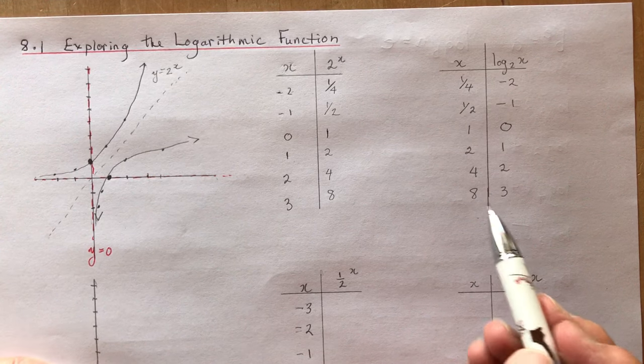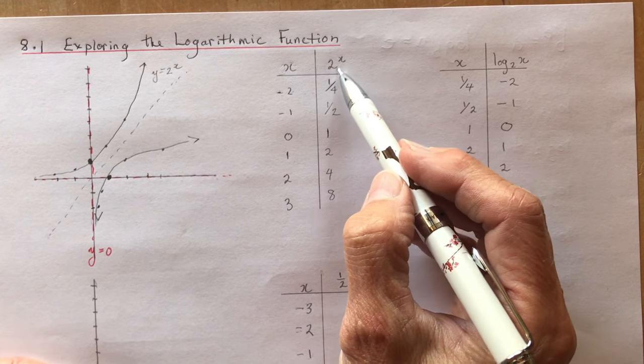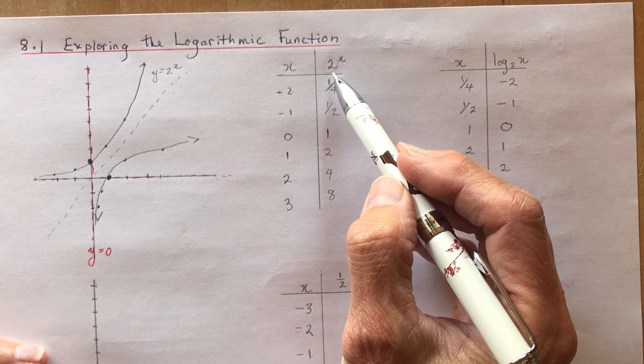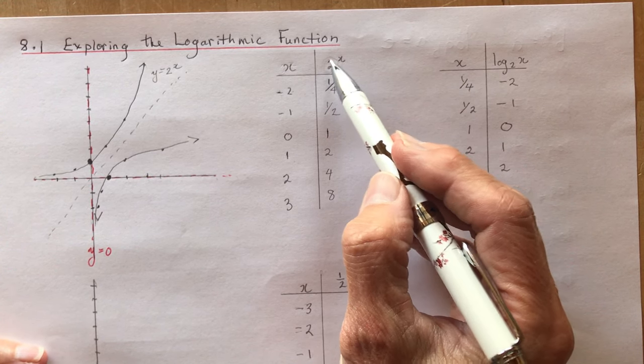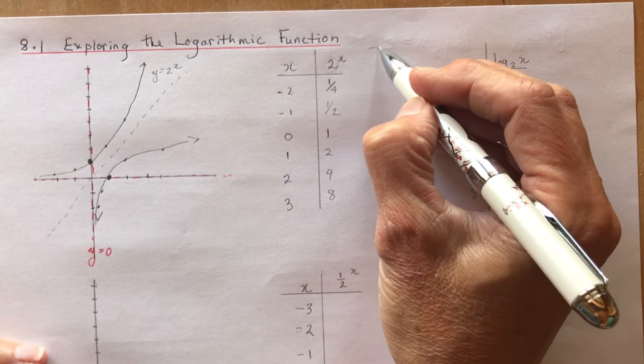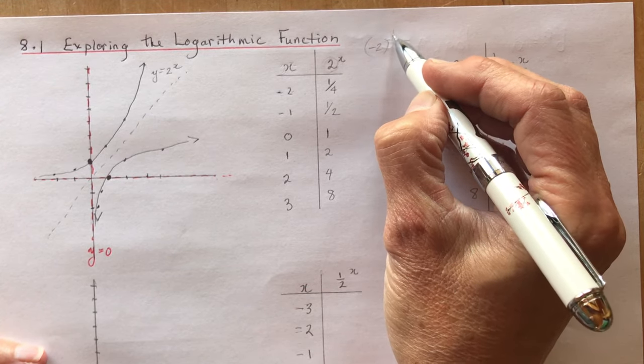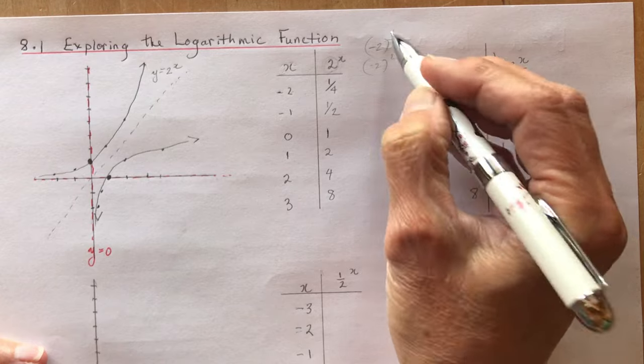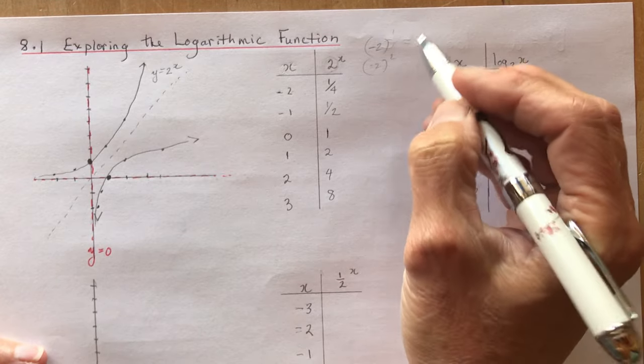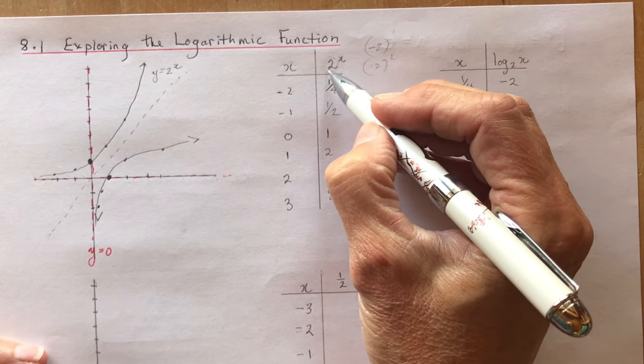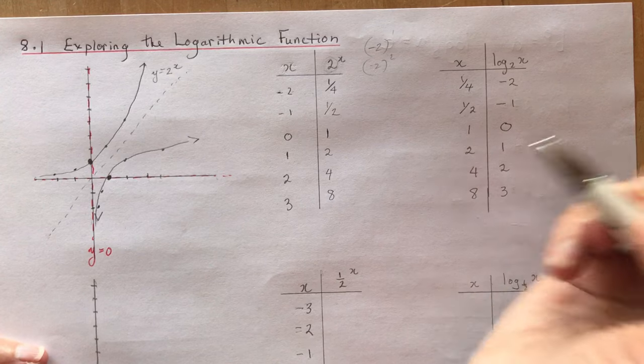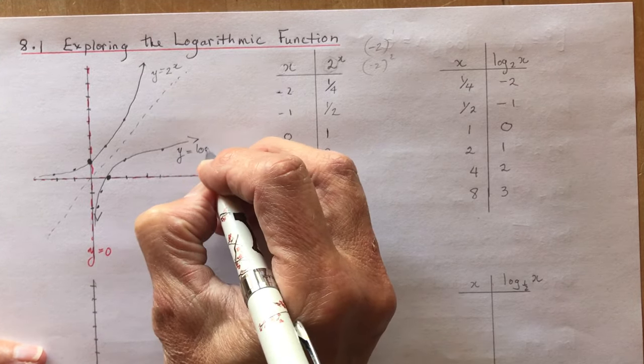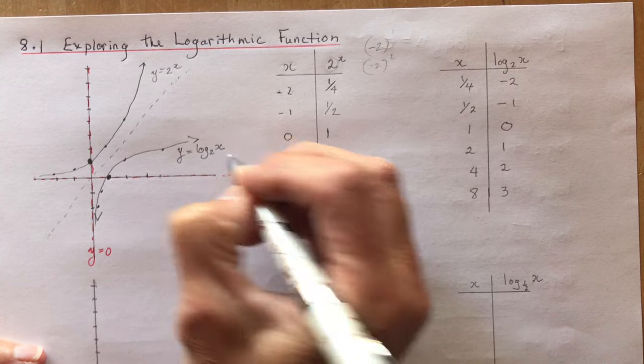You should also remember that you can't have a base that is a negative number. Maybe you recall from grade 11, if this was -2 in brackets, -2 to the power of 1 would be negative, and then if you squared it, it would be positive. You'd have points all over the place. So exponential functions, the base has to be positive. This is y equals log base 2 of x.